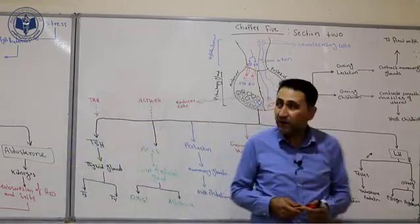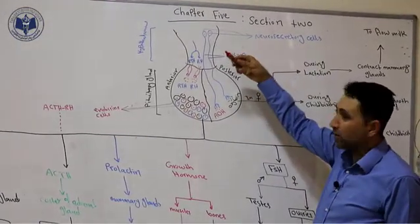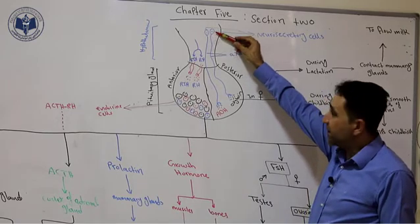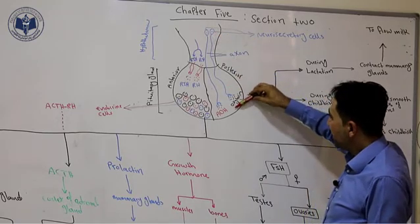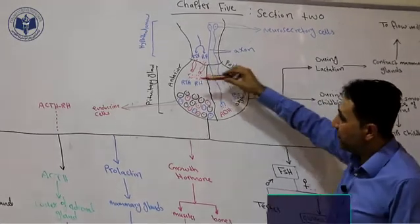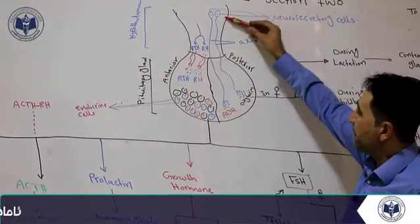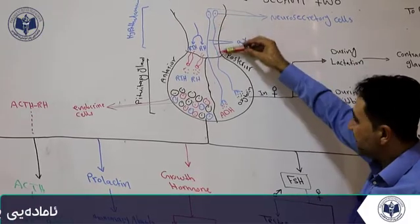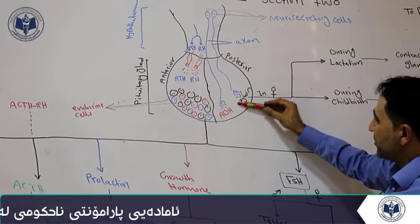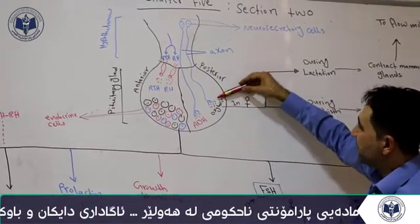Neurosecretory cells are specialized neurons that can produce hormones. Some of these neurosecretory cells extend their axons into the posterior pituitary gland. The pituitary gland is divided into a posterior lobe and an anterior lobe, and the axon terminals of these neurosecretory cells are located within the posterior lobe.